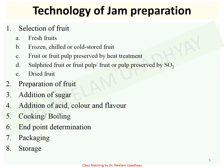For selection of fruit, you can have fresh fruits, cold stored fruits, fruits or fruit pulp preserved by heat treatment, fruits or fruit pulp preserved by sulfur dioxide, or dried fruit. If you have fresh fruit, it is actually the best for preparation of jam, but you should have a mixture of underripe and ripe fruits.